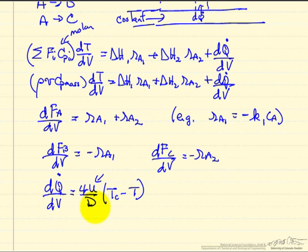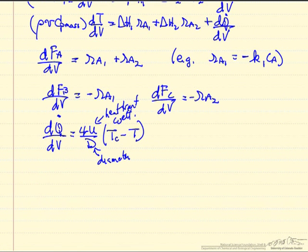So U is a heat transfer coefficient. This is the diameter of the tube. This is heat transfer coefficient. And so let's just look at a few other things that we might want to take into account.